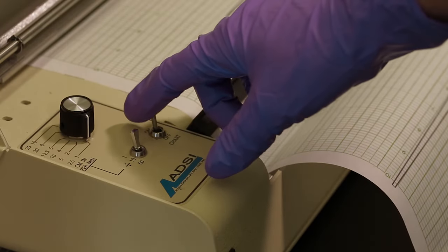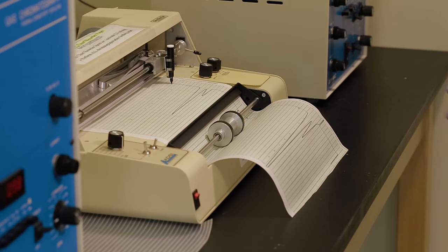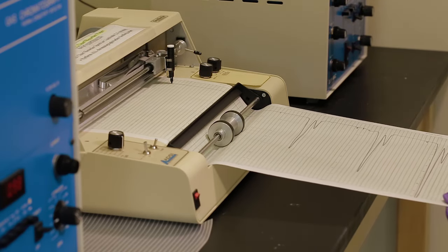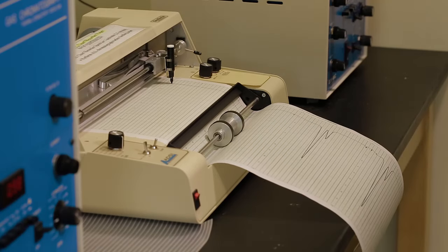When you are finished, turn off the chart recorder. Feed the chart paper to remove all chromatograms from the chart recorder. Cut with scissors.